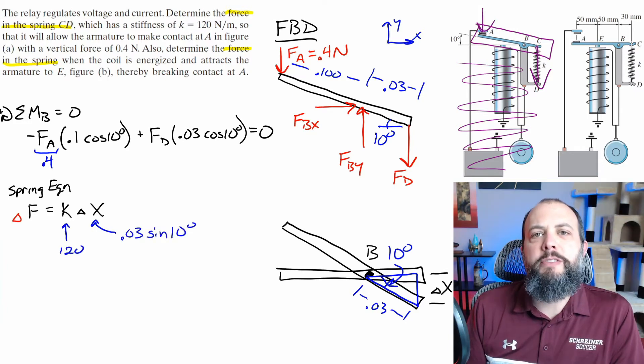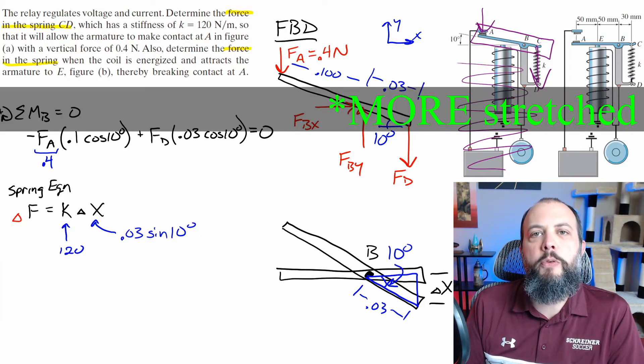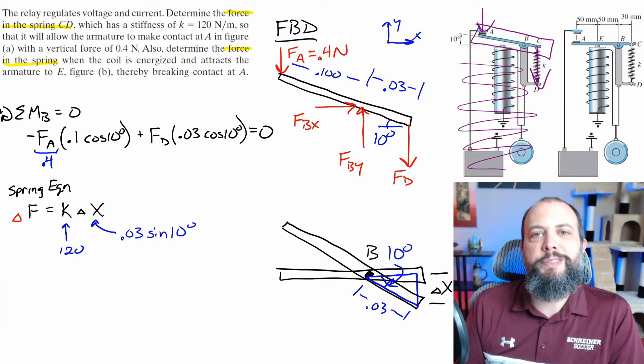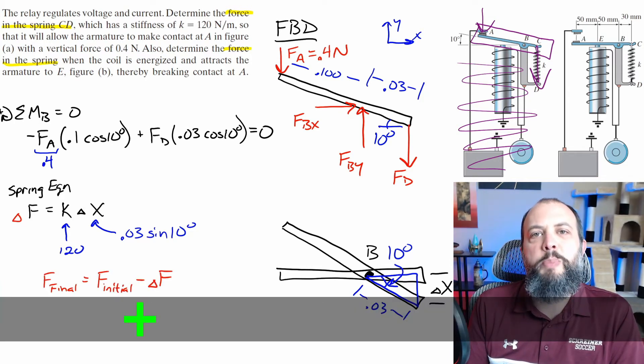To answer part B of this problem, I drew both positions of that bar overlapping each other. So you can see the change in distance for the spring. Basically in state two, it is less stretched than before. And you can use that change in distance to find the change in force. And then your final answer for part B is going to be your answer from part A minus this change in force due to the change in length of the spring.